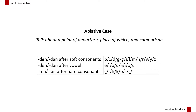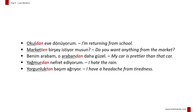We use the ablative case to talk about a point of departure, place of origin, and indicating a comparison. The Turkish suffix for the ablative case is -den, -dan, -ten, -tan, which corresponds to 'from' in English. Okuldan eve dönüyorum. Marketten bir şey istiyor musun? Benim arabam o arabadan daha güzel. Yağmurdan nefret ediyorum.